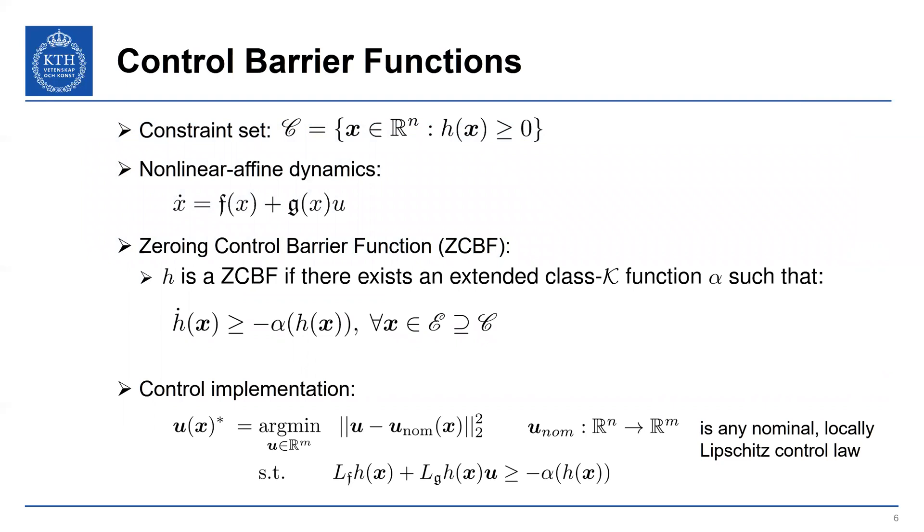So to present our approach, we're going to have to first have a little background on control barrier functions. Conventionally, define a constraint set in this form. So C is our constraint set, and it's the set of all states where some continuously differentiable function H is non-negative. In this case, we look at nonlinear affine dynamics. We consider a zeroing control barrier function ZCBF, which is defined here.